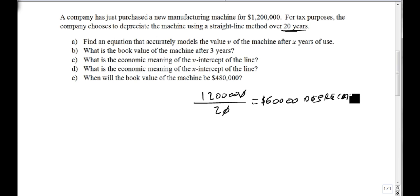Remember, depreciation is subtraction because it starts high and drops low. Part A: the value of the machine equals 1,200,000 minus 60,000 times x, because it's used for x years. This is our answer to part A.